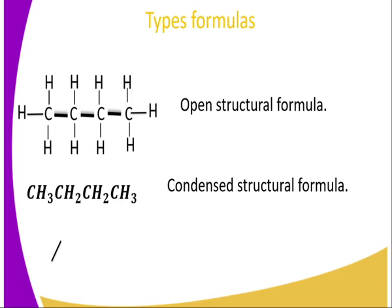We also have the skeletal formula, which is illustrated in a zigzag manner. The skeletal formula focuses on the bond between carbon and carbon atoms within the chain. The first carbon-to-carbon bond is drawn upward, the second carbon-to-third carbon bond is written downward, and carbon number three bonded to carbon number four gives another bond. That's how we illustrate a skeletal formula.